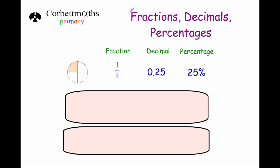Now we're going to move on to quarters. First of all, one quarter. This diagram represents one quarter because one of the four sections is shaded in. So that's 1 over 4. As a decimal number, that is 0.25, and as a percentage that is 25%. That's a very important one to learn.